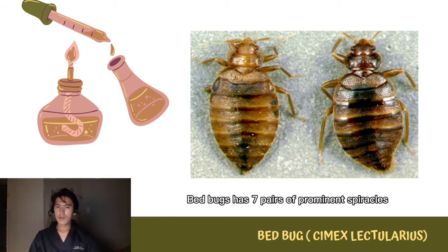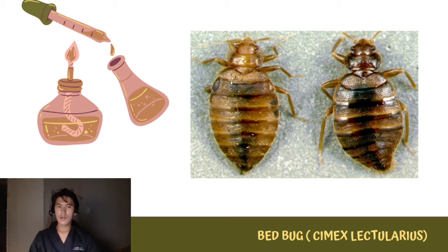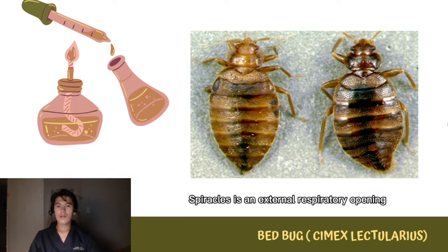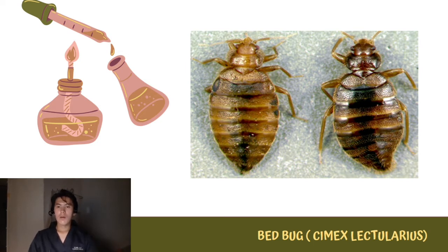Bedbugs have 7 pairs of prominent spiracles. As you can see here in the picture, there are 7 spiracles: 1, 2, 3, 4, 5, 6, 7. Spiracles are the external respiratory openings where the bedbug breathes.